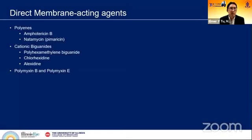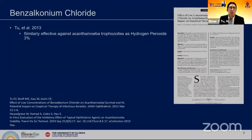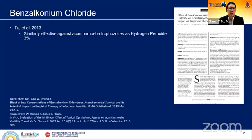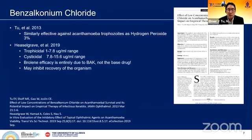Starting with direct membrane-acting agents, there are polyenes like amphotericin and natamycin, and biguanides. One thing to understand is that the components of a drop you use — including preservatives — do impact efficacy. We showed in 2013 that benzalkonium chloride found in normal concentrations of antibiotics, other than moxifloxacin, is actually fairly effective against trophozoites. This was confirmed two years ago in a Moorfields study showing BAK could be both trophicidal and cysticidal — they attributed a large portion of propamidine efficacy to the BAK rather than the base drug.